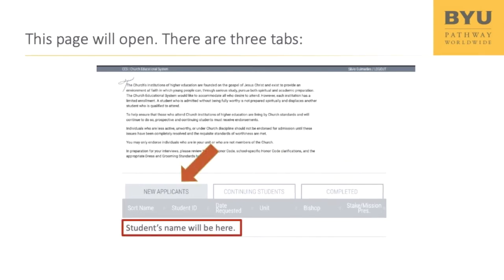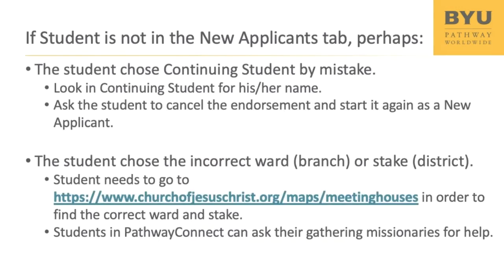Your students will be in the New Applicants tab. If your student is not in the New Applicants tab, it may be because the student chose Continuing Student by mistake. You can check by clicking the Continuing Students tab. A new student listed there needs to start the endorsement over — ask him or her to cancel the endorsement request and begin again as a new applicant. If the student chose the incorrect ward, branch, or stake district, he or she should go back to the application to choose the correct location. Students can go to the website shown here if they need to find the correct ward and stake.